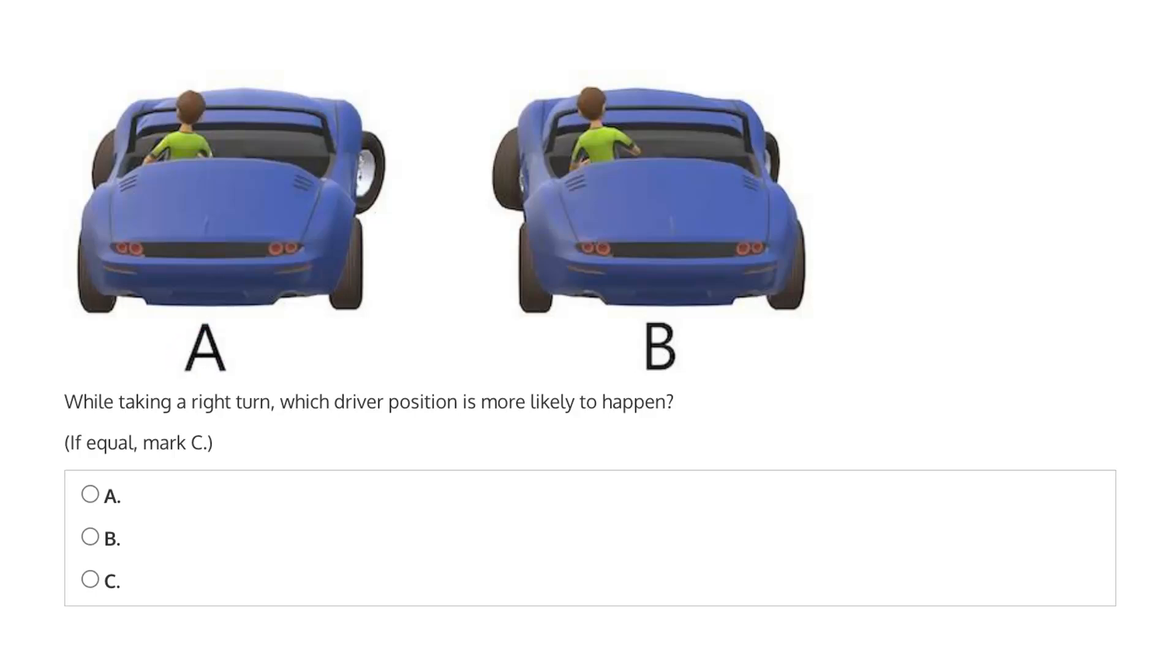Is it A, where the driver leans to the right, B, where the driver leans to the left, or if equal, then mark C?